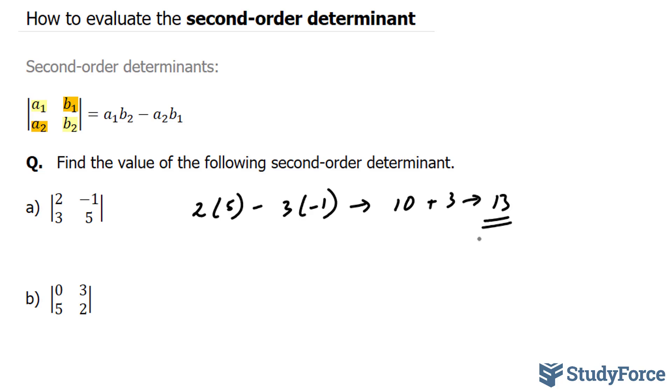That's our answer for a. Moving on to b, we have the following. We have a1 as 0 and b2 as 2. And that just goes to 0.